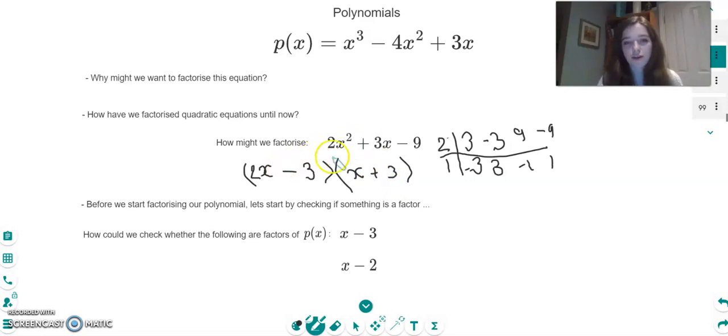Just to double check our maths: 2x squared, plus 6x, minus 3x, minus 9. Yep, we've definitely factorized this.